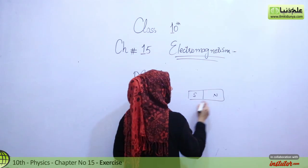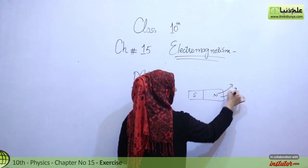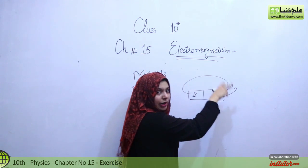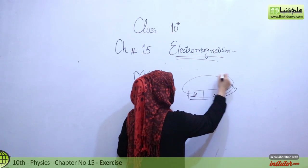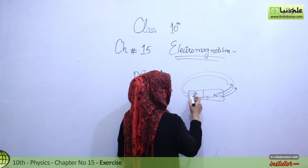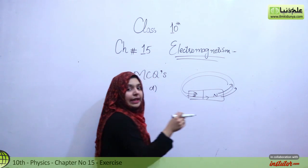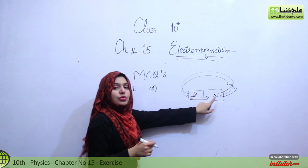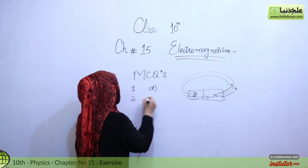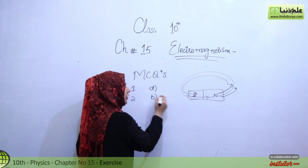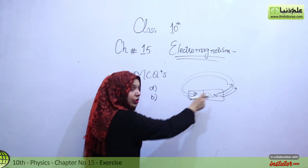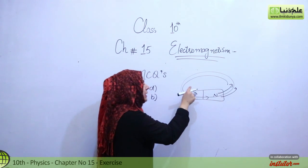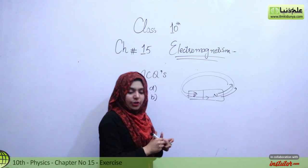Inside the bar magnet, the field lines go from south to north. Outside the magnet the lines go from north to south, but within the bar the direction is south to north. So our option B is the right option — inside the bar magnet the magnetic field lines go from south to north.